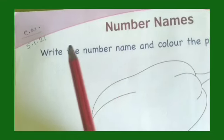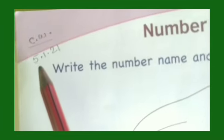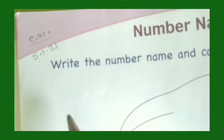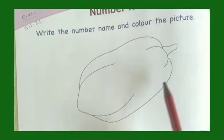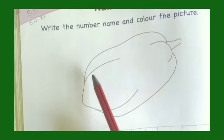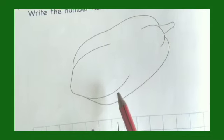Before we begin to write, what we do? We write C-W and the date. So, look here. What can you see? It's a picture of a... Can you name it? It's a picture of a papaya. Right?